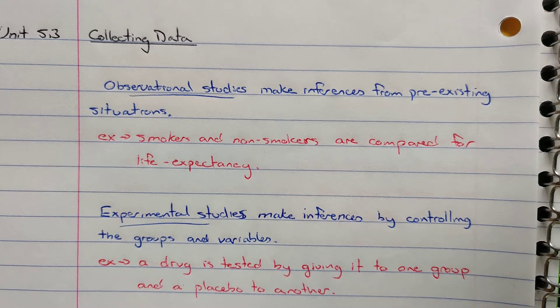An example, we can compare smokers and non-smokers for their life expectancy. Or we can have an experimental study where we make inferences by controlling the groups and the variables, which would be like a drug being tested by giving it to one group and then a placebo to another.